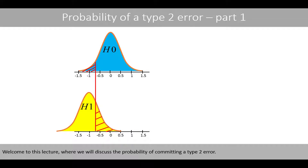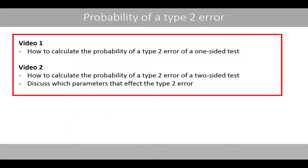Welcome to this lecture, where we'll discuss the probability of committing a type 2 error. This lecture is divided into two videos. In the first video, we'll see how we can calculate the probability of a type 2 error of a one-sided test, whereas in the second video, we'll see how we can calculate the probability of a type 2 error of a two-sided test. We'll also discuss the parameters that affect the type 2 error.